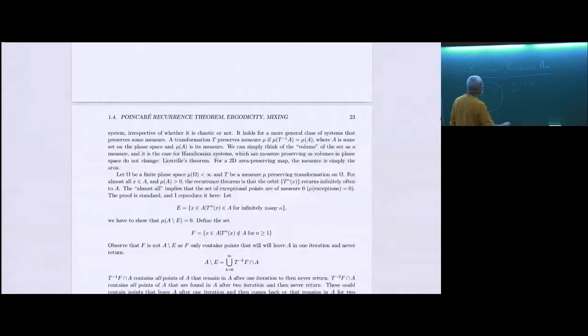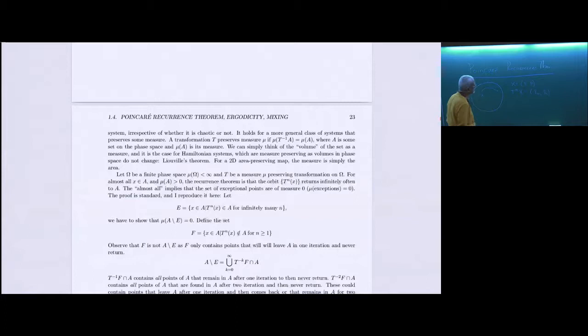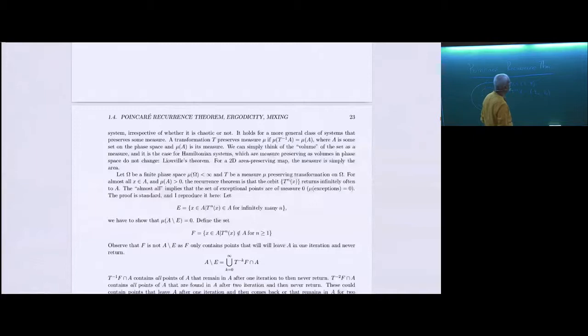I'm going to look at it as a discrete transformation, though you can generalize it for continuous flows as well. T^n takes the point X and evolves it for time n, giving positions and momenta at time n. So X' = TX, and we iterate this. There is an orbit in phase space, and we are interested in properties of this orbit — that's what dynamical systems and dynamics are about.